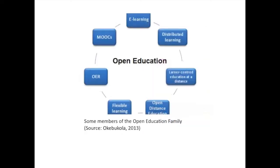According to Okpopola 2013, open education has elements that surround it. We have MOOCs — that is, massive open online courses — where learning content is delivered online. We also have e-learning. Distributed learning is a situation whereby a particular topic can be learned separately through different learning sections. Learning at a distance saves learners the risk of travelling from a very long distance to another place. These learners also have the opportunity to customise the place, the mode of lecture, and time of learning.